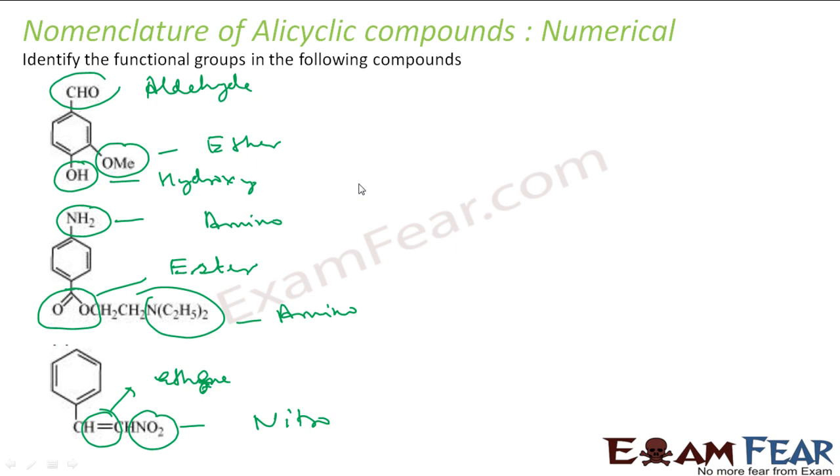Thus we clearly identified all the groups here. So this is aldehyde, this is ether, this is hydroxy, this is amino, this is RCOOR or ester, this is amino again, this is double bond ethene, and this is nitro.